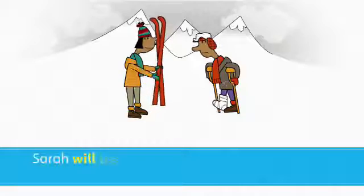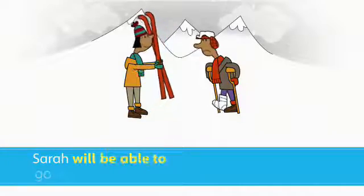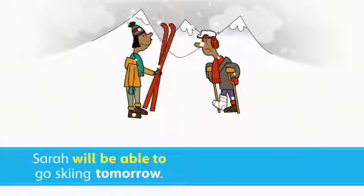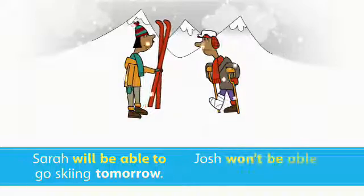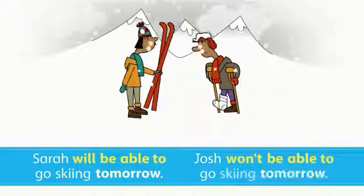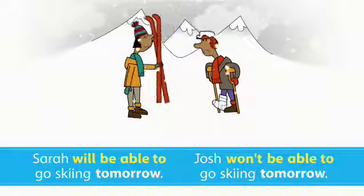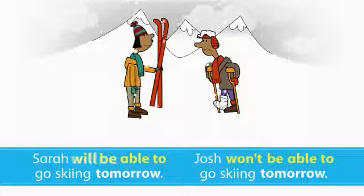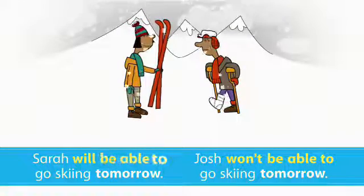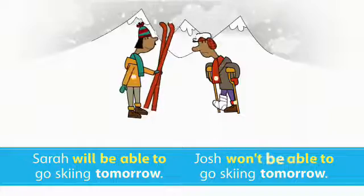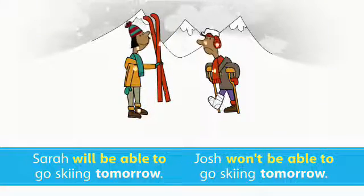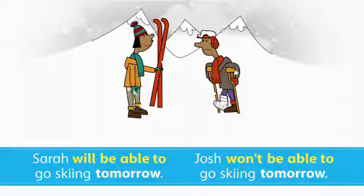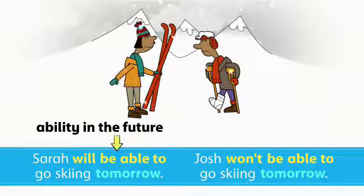Sarah will be able to go skiing tomorrow. The future tense of can and can't is will and won't be able to. We use will and won't be able to to describe ability in the future.